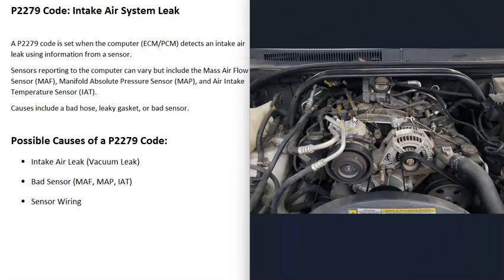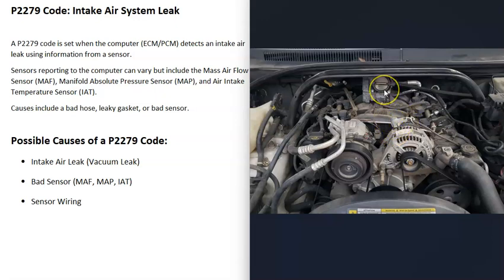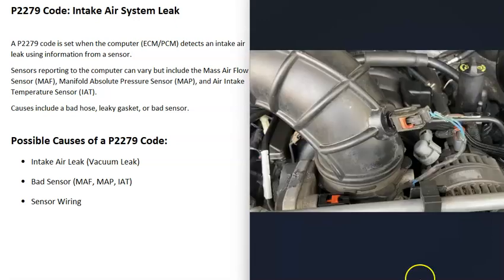So basically you're going around looking for any kind of leaks where air is getting in around the throttle body. That's the first thing that could cause this — an intake air leak, also called a vacuum leak.